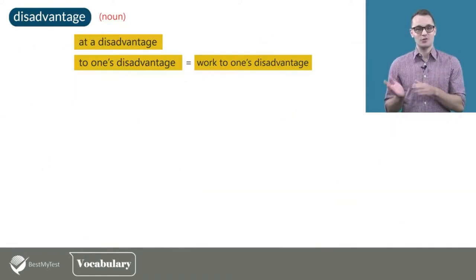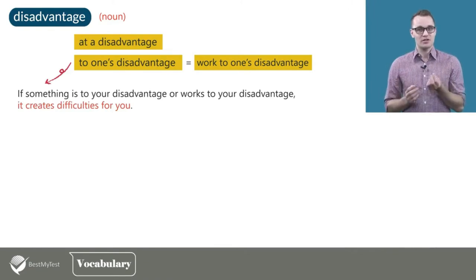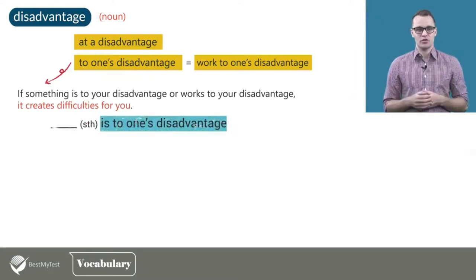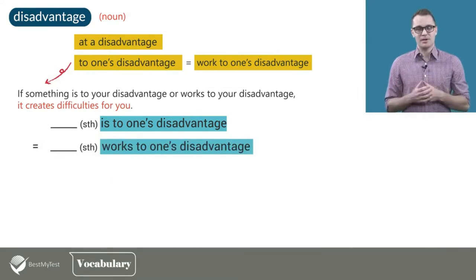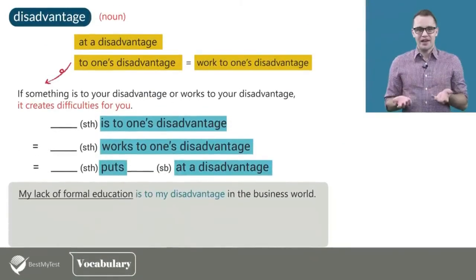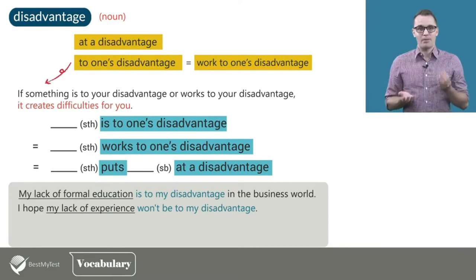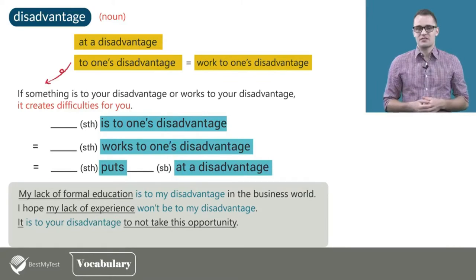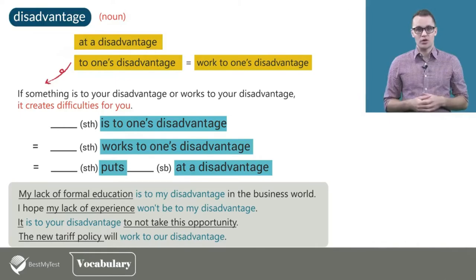Now let's look at the other phrase: to one's disadvantage. If something is to your disadvantage or works to your disadvantage, it creates difficulties for you. Something is to somebody's disadvantage is the same as something puts somebody at a disadvantage. For example: my lack of formal education is to my disadvantage in the business world. I hope my lack of experience won't be to my disadvantage. It is to your disadvantage to not take this opportunity. The new tariff policy will work to our disadvantage.